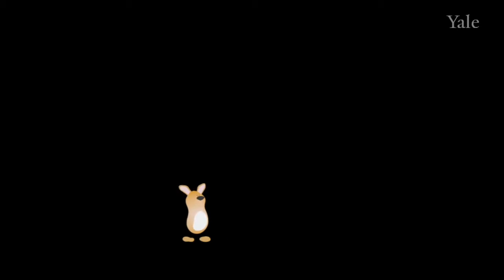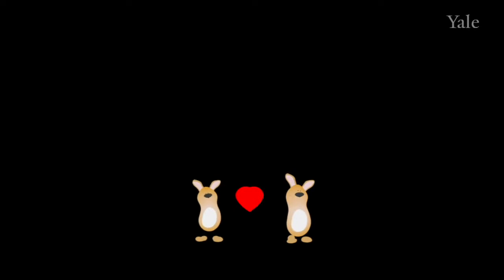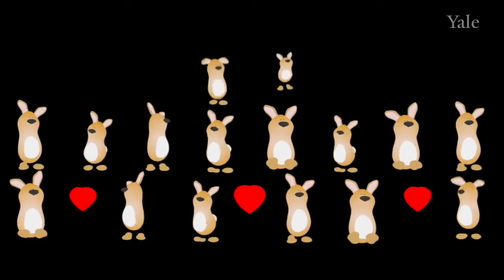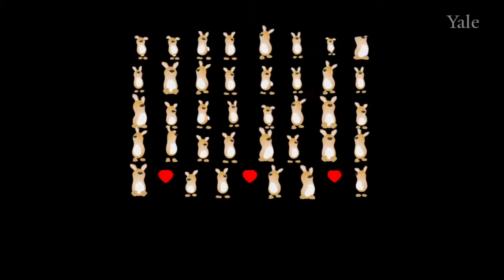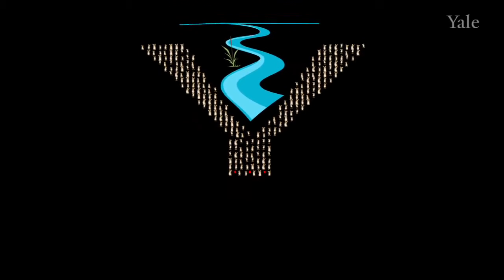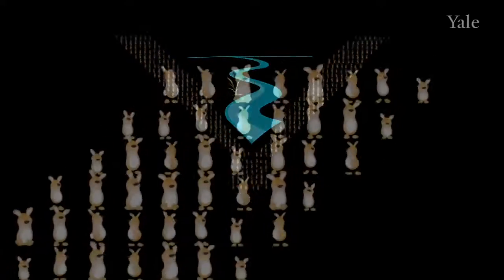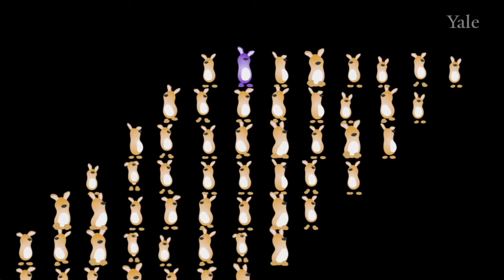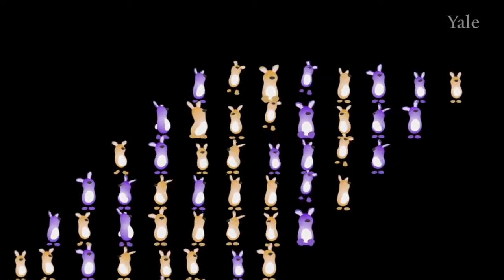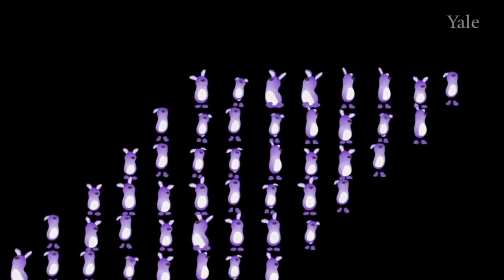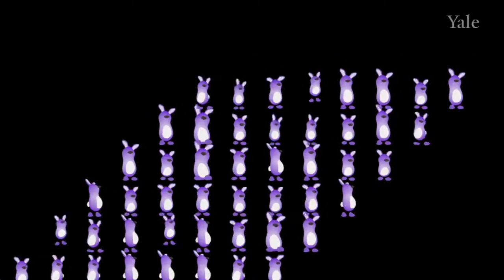How does this branching occur? Imagine a population of bunnies continually reproducing, giving rise to one generation after another. At some point, a river changes its course, creating two separate bunny populations and preventing them from reproducing with one another. Later, in one of these populations, a baby pops up with a mutation — a new feature represented here by the color purple. It turns out that purple bunnies are increasingly successful in this environment, and soon the entire population on that side of the river is made up of purple bunnies.